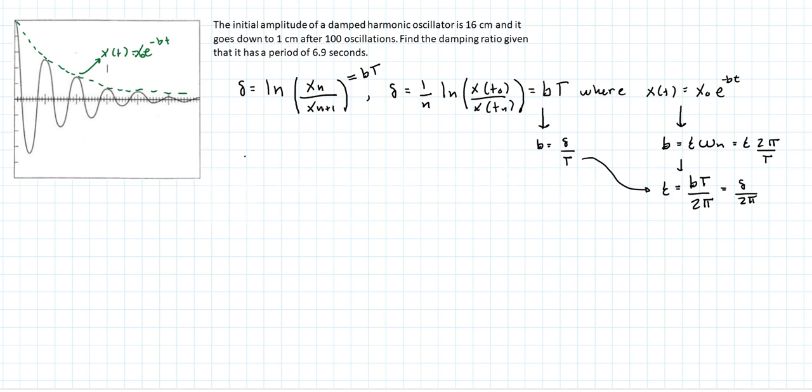So let's get to it. We'll take the logarithmic decrement: that's equal to 1 over 100 multiplied by the natural log of the amplitude at time 0. In the problem statement it says 16 centimeters divided by 1, 100 periods later. And that'll give you the natural log of 16 over 100, and that's 0.02773.